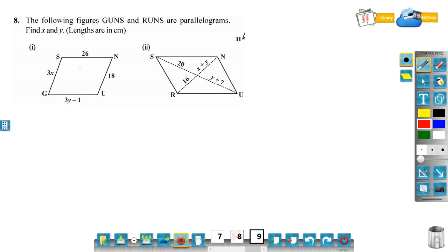We know that opposite sides of a parallelogram are equal, so GU is equal to SN. GU is 3y minus 1 equals SN which is 26. Now we got the equation.